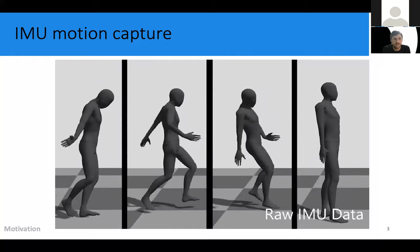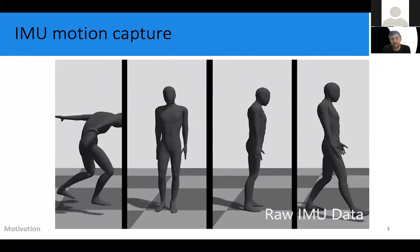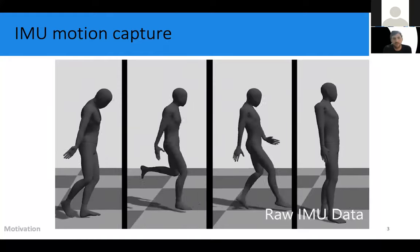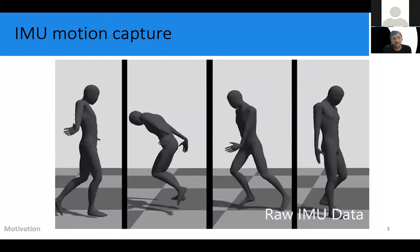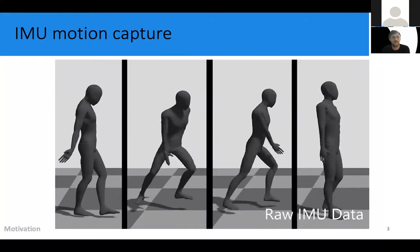The data produced with this system doesn't contain any notion of global translation. So you can see the characters are just suspended in space. And the reason for this is that IMU sensors are pretty good at measuring orientations, but not so good at measuring position or displacement.